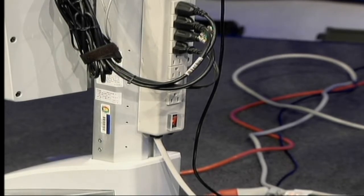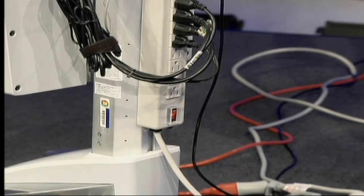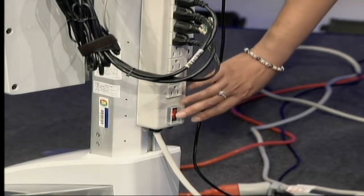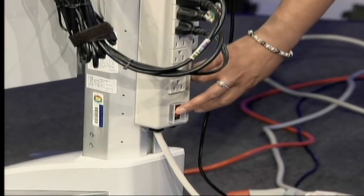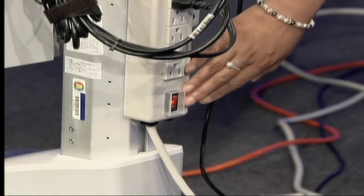And now we are ready to turn on the CART. To turn on the CART, you press the red power button, switch it on, and it's located on the power strip at the bottom.